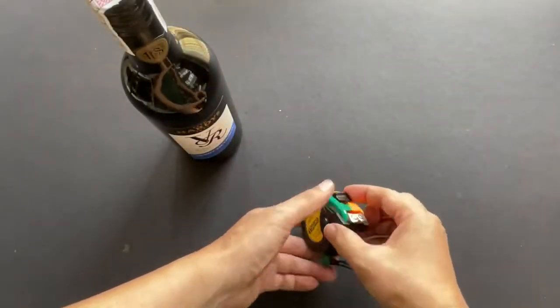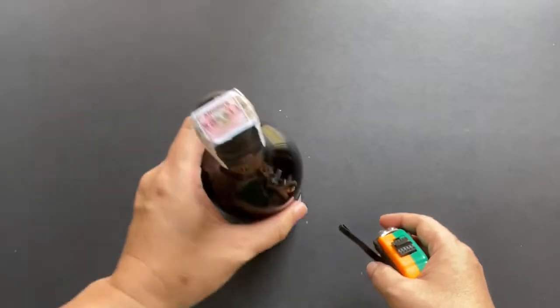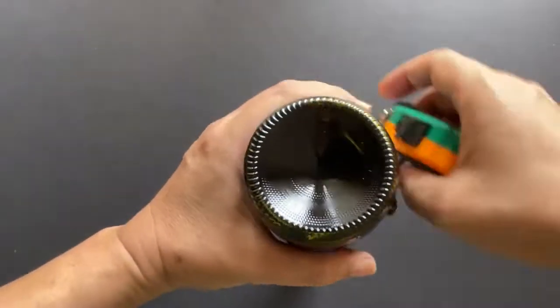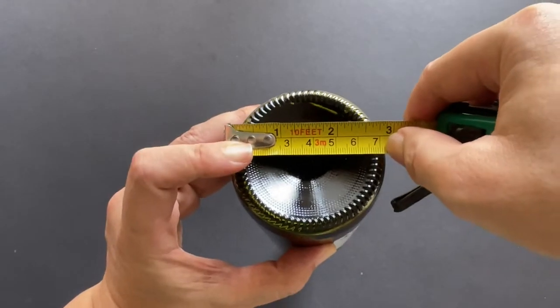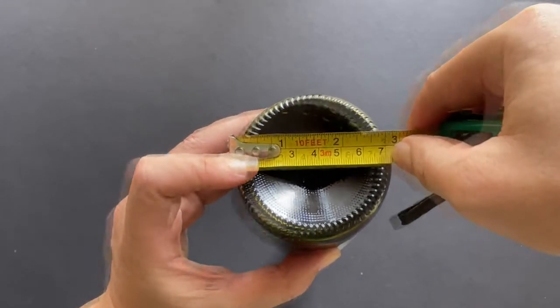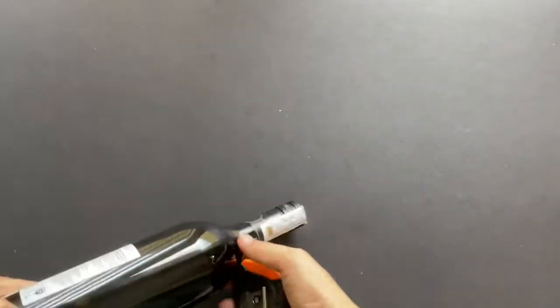If you don't have a caliper, you can use a measuring tape. Take a measurement of the bottom diameter and eyeball the reading. Granted it's not as accurate as a caliper, but it'll do.